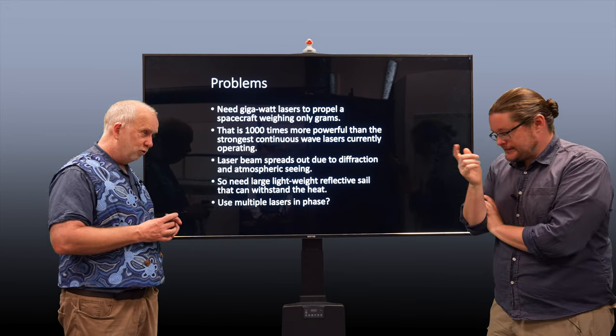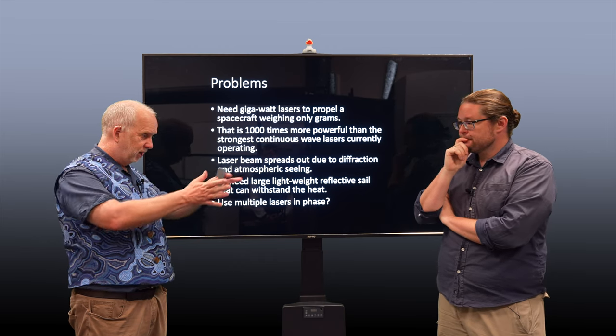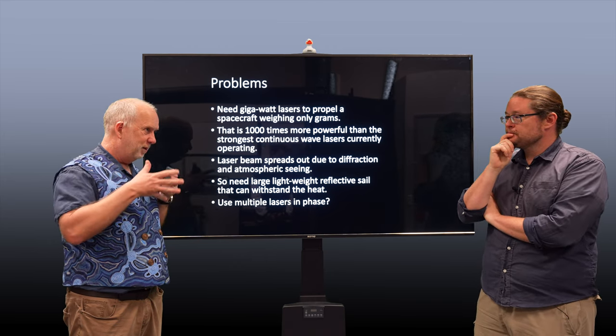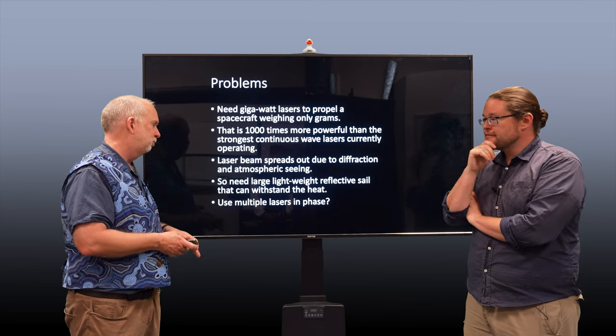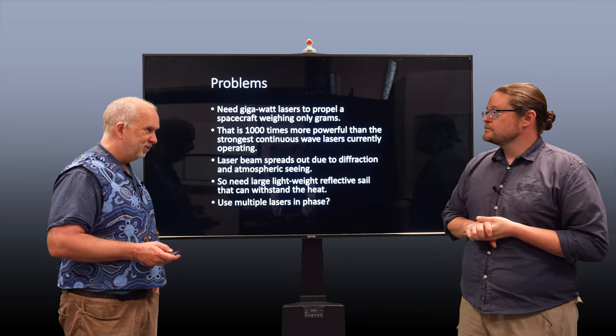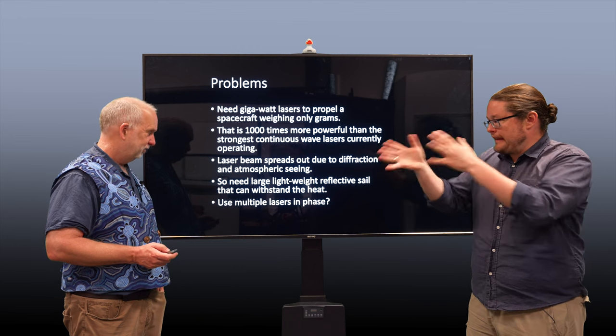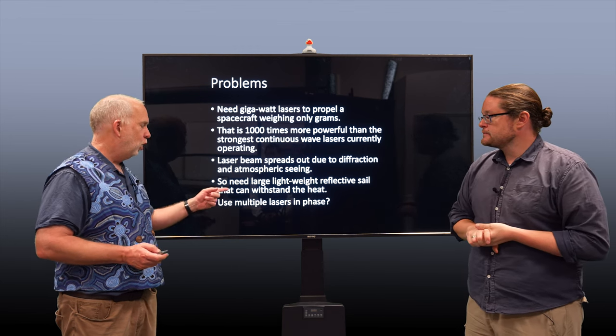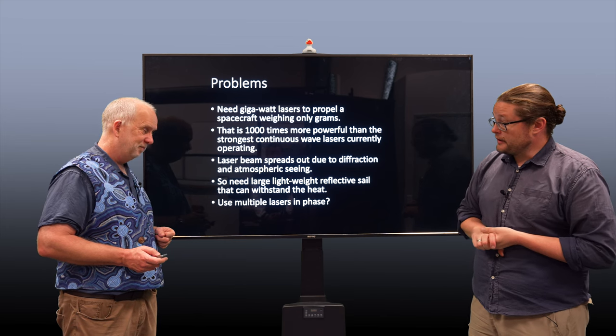And the laser beam spreads out due to diffraction. We've talked about this in Earth observation. The light, just as you get a blurry image of something coming in, you get the laser beam spreads out, which means that less and less of it's going to hit the actual target. And you need a large, lightweight, reflective sail that can withstand the heat.